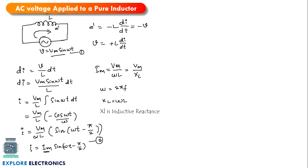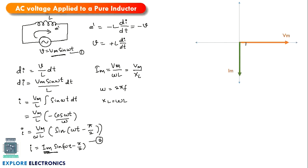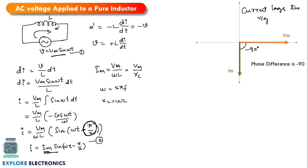Comparing the voltage expression V = Vm sin(ωt) and the current expression I = Im sin(ωt - π/2), there is a phase difference of -90 degrees. In the phasor diagram, if we place voltage along the x-axis with magnitude Vm, the current will lag by 90 degrees. We can say the current lags the voltage, or equivalently, the voltage leads the current by 90 degrees.